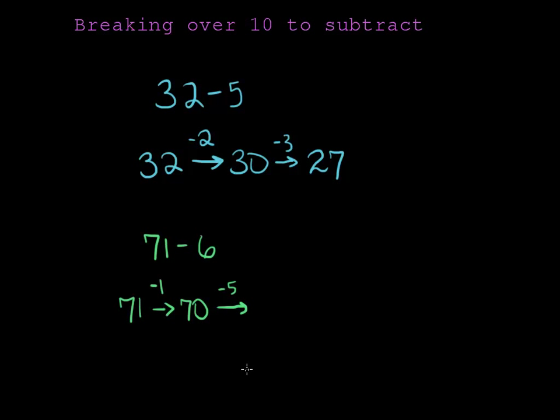Well, 70 minus 5 is one of those easy problems. I know it's going to be 60 something, and it's going to be 65 because 5 is the complement of 5.